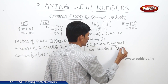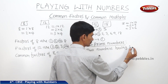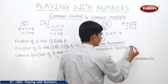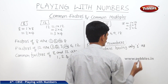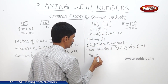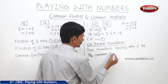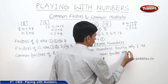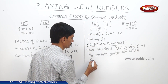Two numbers having only one as the common factor are called co-prime numbers.